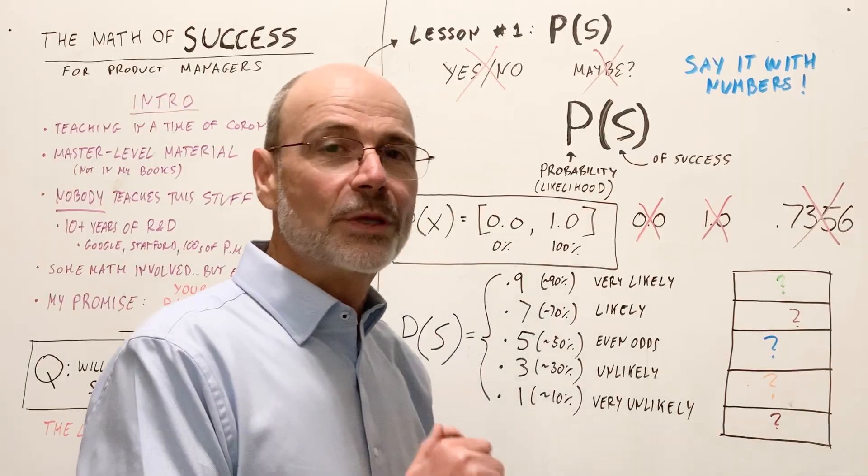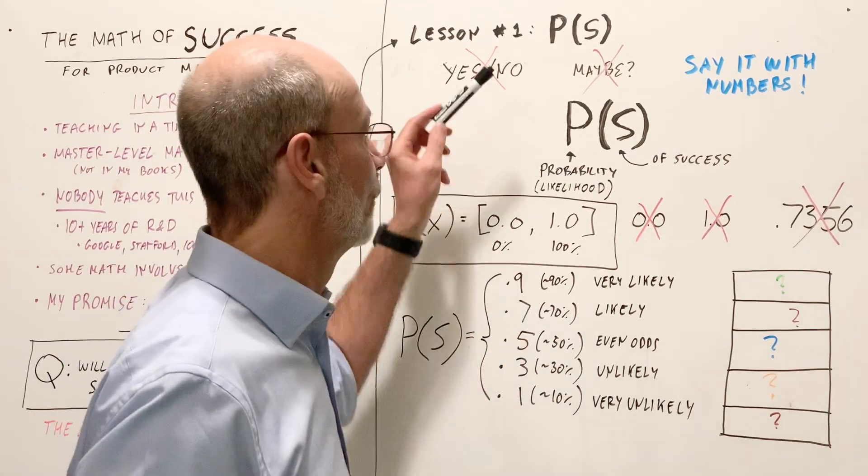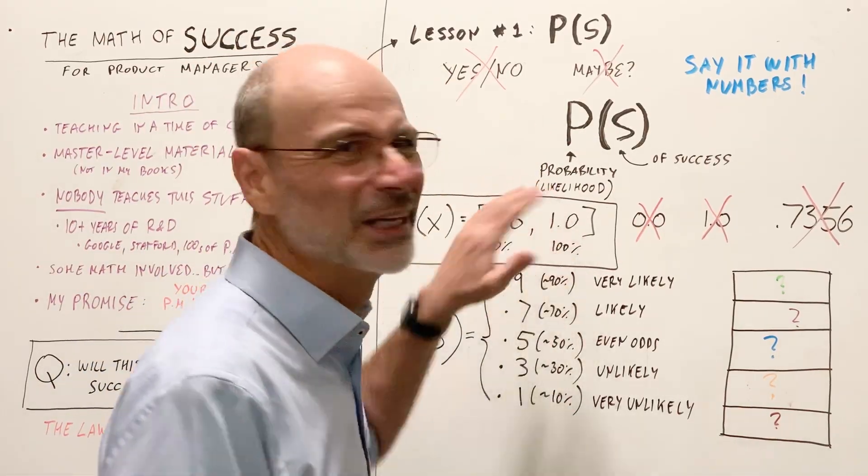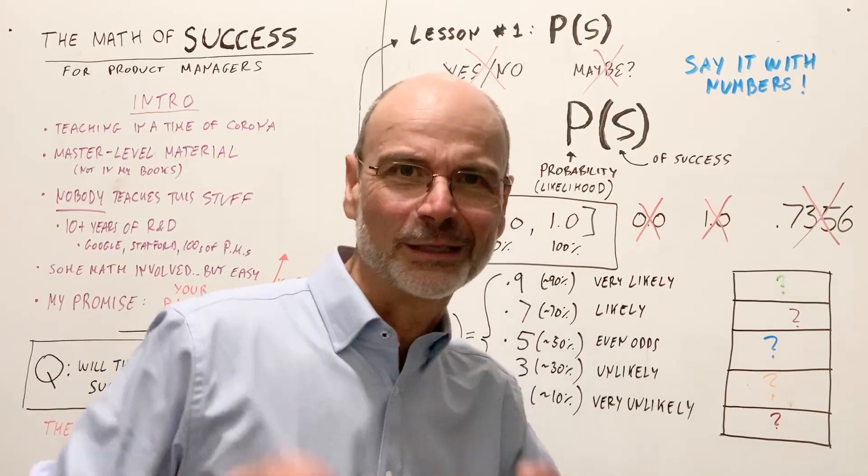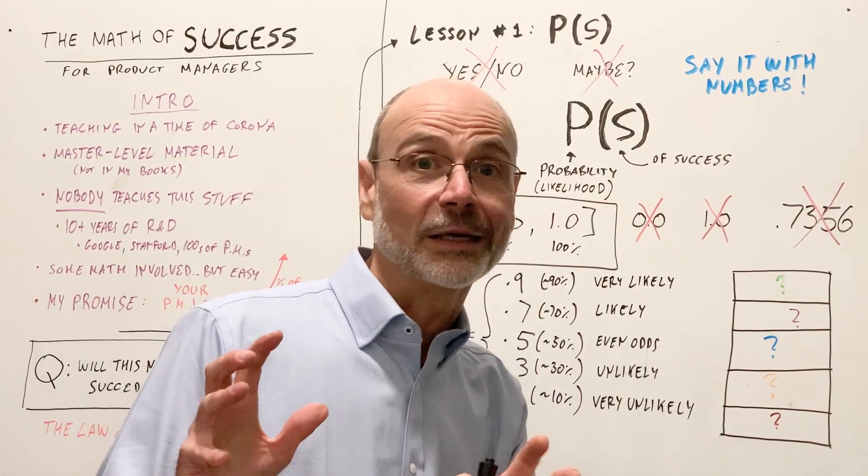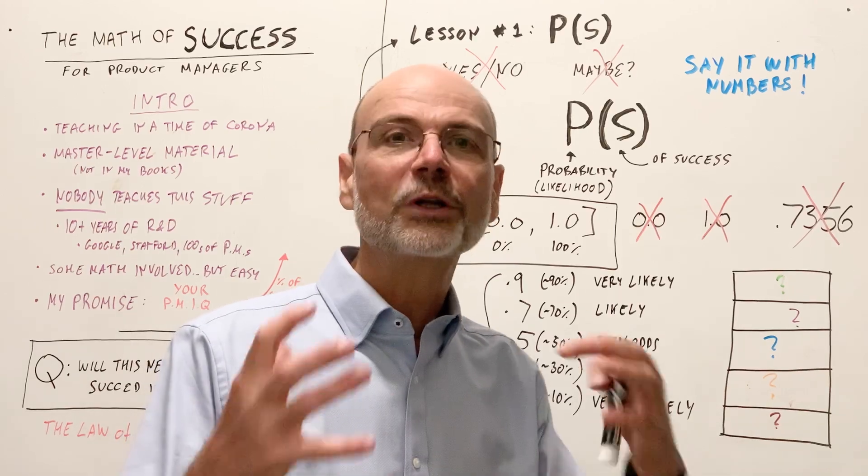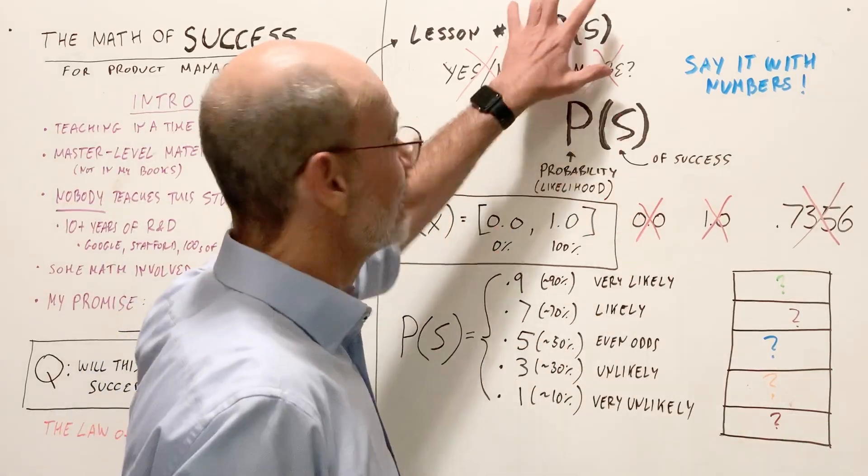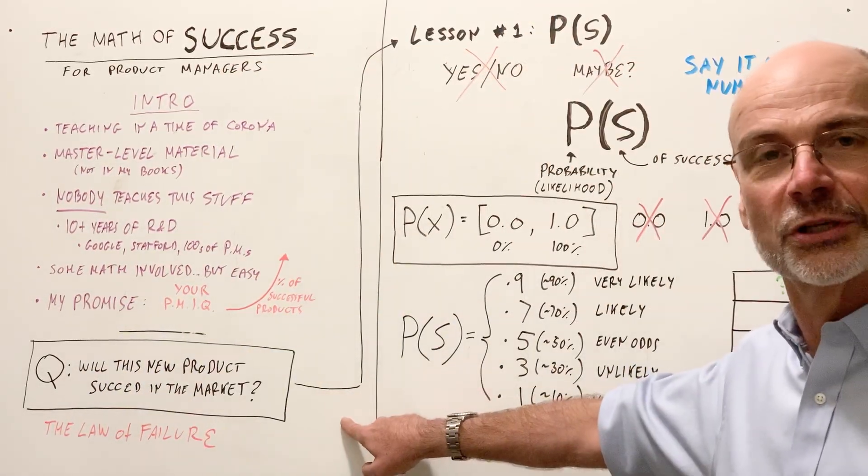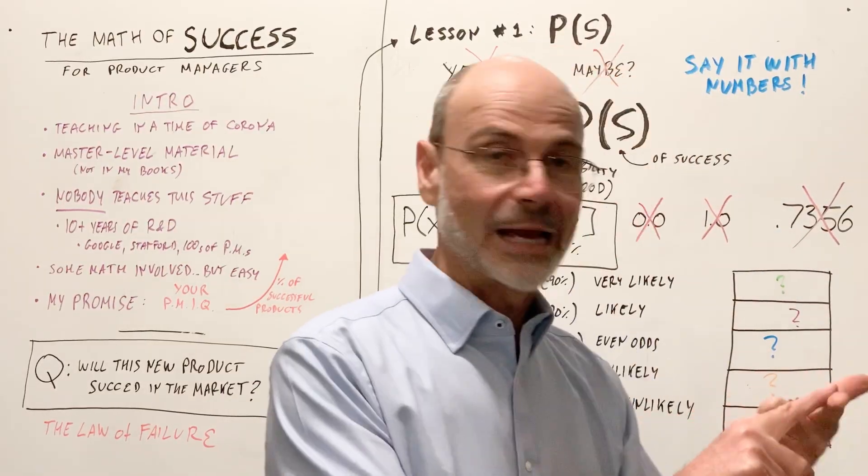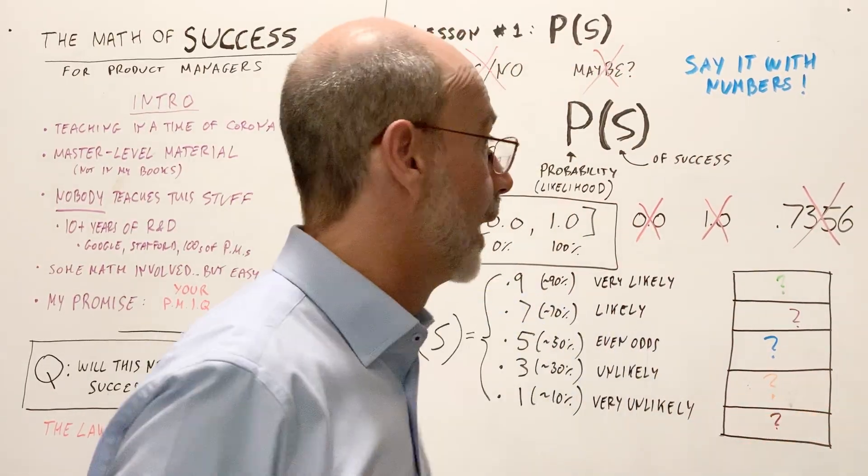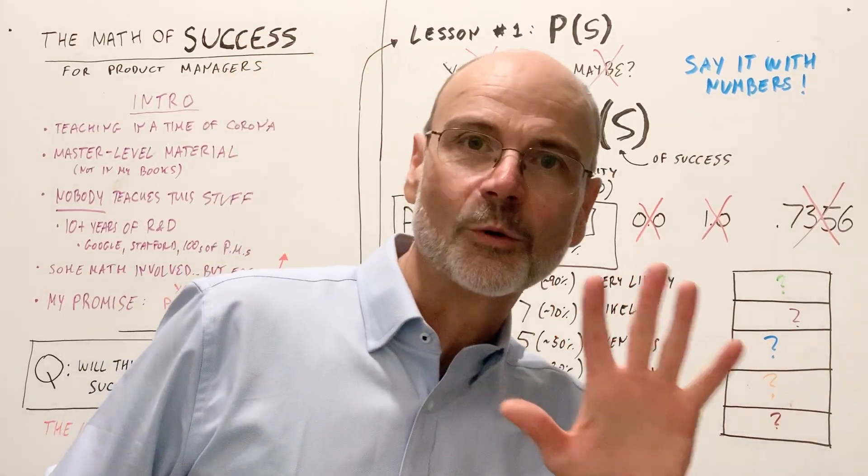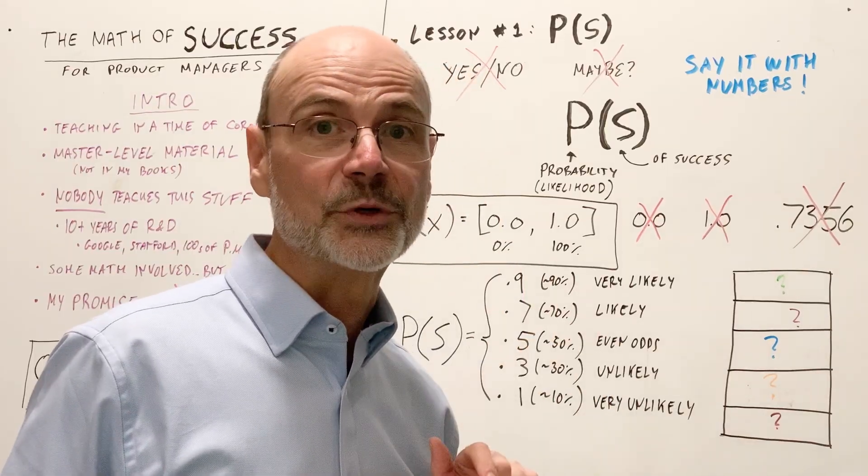So you cannot say yes or no, or maybe there has to be a number. And here we're dealing with a probability. Therefore, the notation P of S stands for probability of success. Now, technically, this is more a likelihood than a probability, but that's a fine distinction that we're not going to go into right now. In fact, ever, because remember, my goal is to simplify things. So let's think in terms of probability of success. So P of S, this important notation, right? This is how we will answer the question. Will this product succeed in the market? I cannot tell you yes. I cannot tell you no. You shouldn't say maybe or hope so. So the best that you can do is to say, well, I'm going to give you a probability of success. I'm going to say it with numbers.